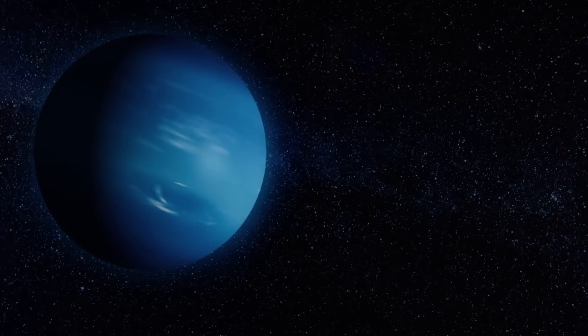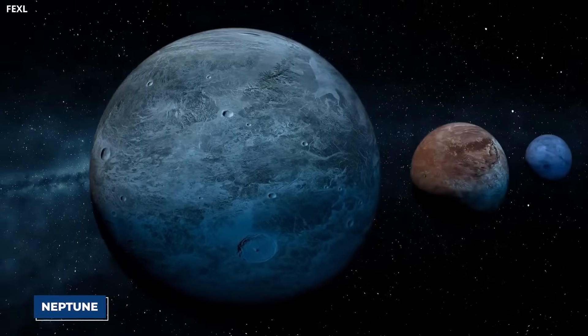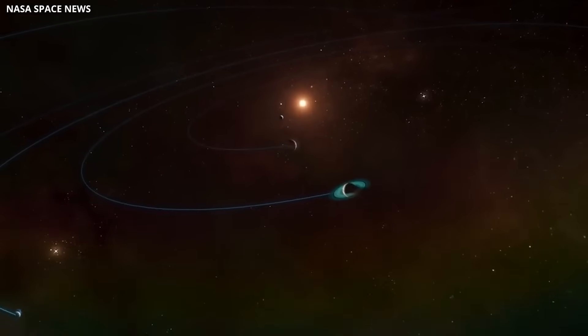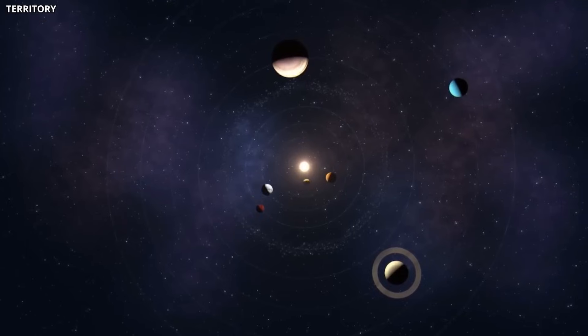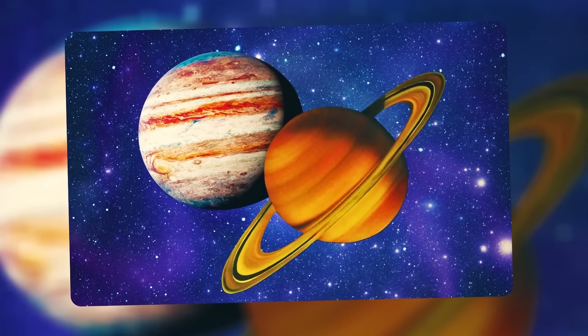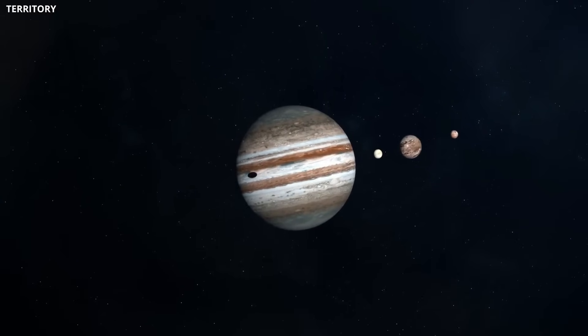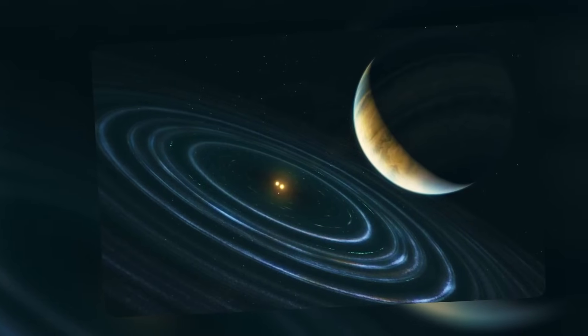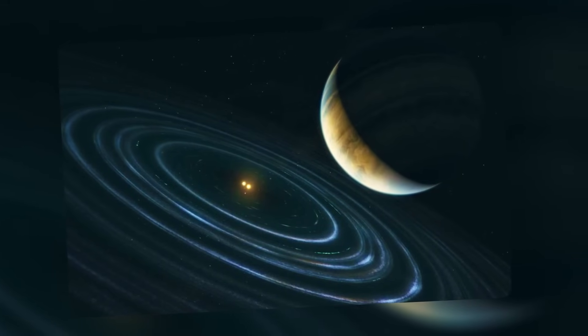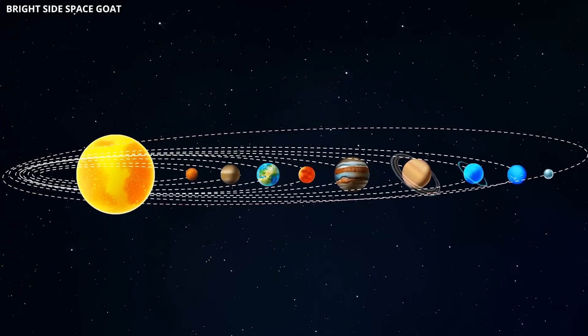A third possibility is that something was there once, a planet the size of Neptune, that got kicked out of the solar system entirely. During the chaotic early days, the giant planets like Jupiter and Saturn were moving around, and their gravity could have flung another planet away. As it left, it might have disturbed the orbits of far-flung icy objects, leaving behind the strange patterns we see today.